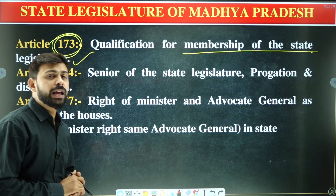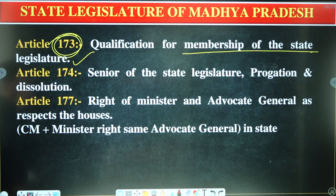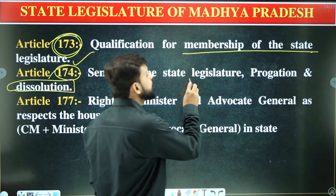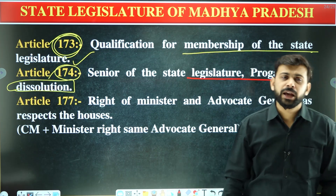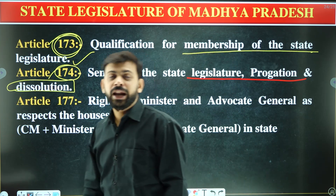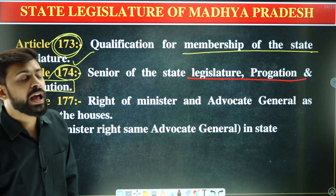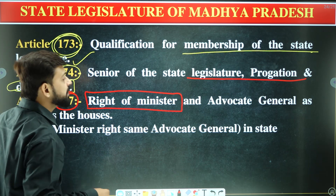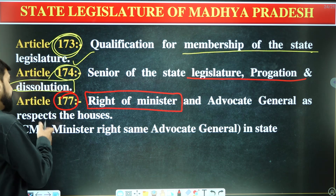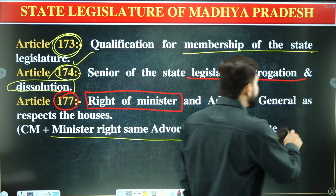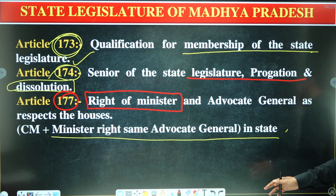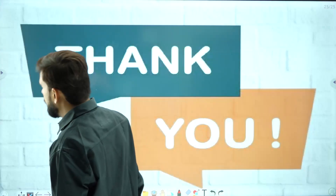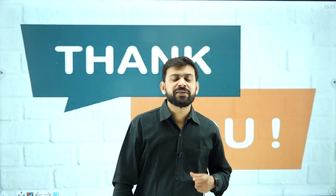Article 174 covers sessions of the state legislature, prorogation, and dissolution. Article 177 deals with the rights of ministers and the Advocate General in respect to the houses of the legislature. The Chief Minister and ministers have the same rights as the Advocate General in the same state.